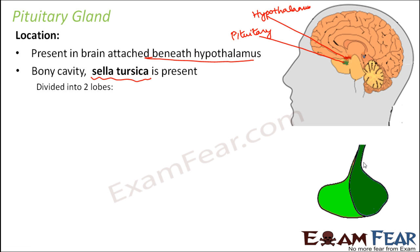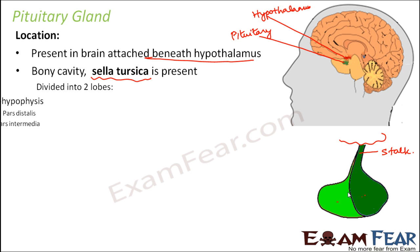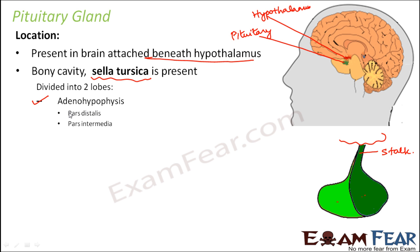Here you can look at the structure in more detail. You can see a stalk-like structure that connects the pituitary gland to the hypothalamus, which is located above. Now, the pituitary gland is divided into two lobes — one in dark green and the other in a lighter green shade. One lobe is known as the adenohypophysis.